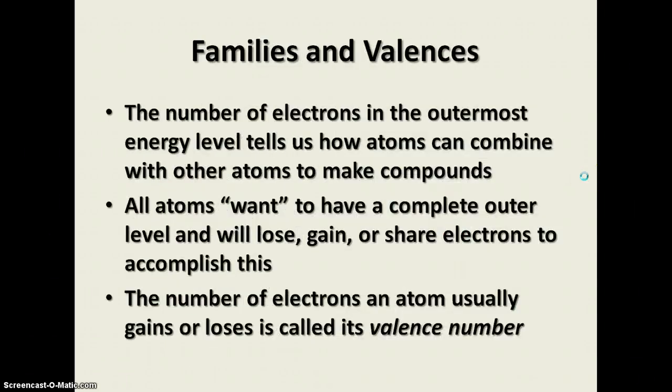And they can have up to eight electrons in that outermost energy level. The number of electrons in that valence electron shell, that's what that's called, the valence shell, tells us how atoms can combine with other atoms to make compounds.